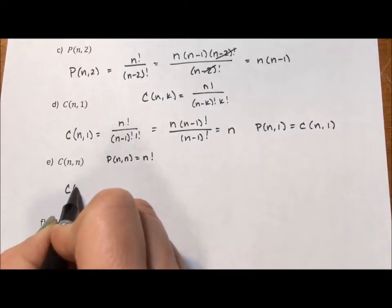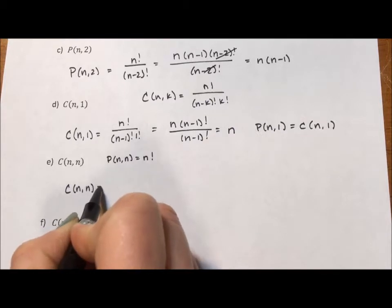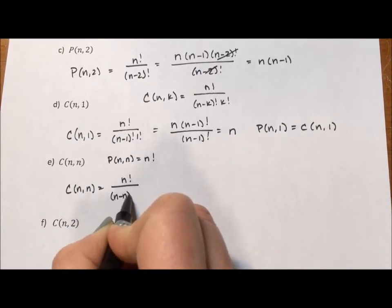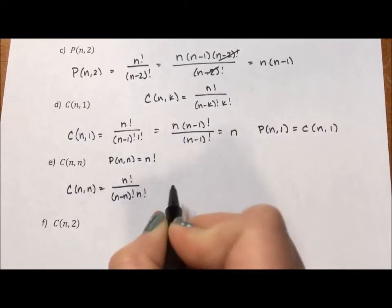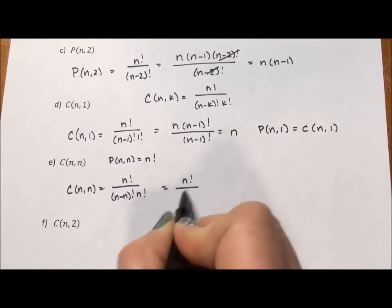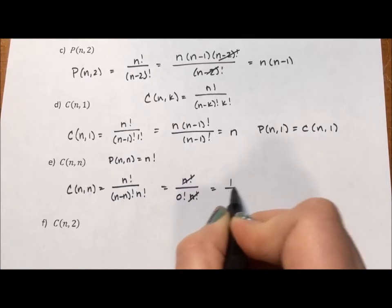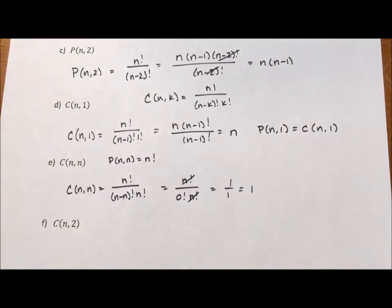Combination, however, of n items taken n at a time is n factorial over n minus n factorial divided by n factorial, which is n factorial over 0 factorial, which is 1, divided by n factorial. These cancel, which leaves us with 1 over 1, which is 1.